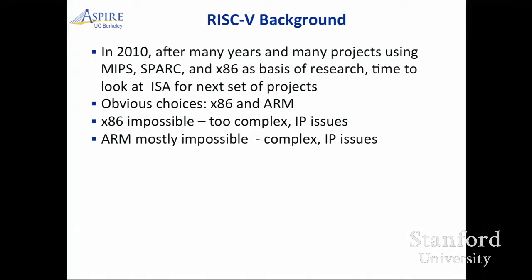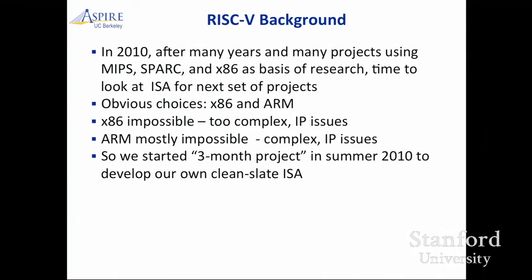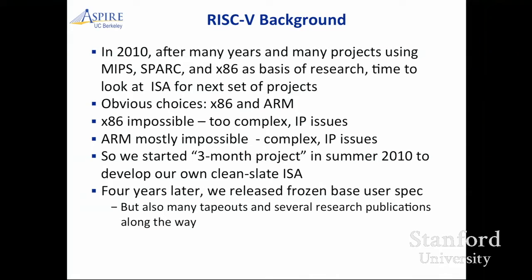When we started this, we thought there were IP issues — since then we've learned there are very, very serious IP issues with ARM and other issues. So in the summer of 2010, we decided on what we thought was a three-month project to develop our own clean-slate ISA. Four years later, we released the frozen user-level ISA specification. But it's not like we just sat down and wrote the spec for four years — over those years we did many silicon implementations, did drafts, and got rounds of feedback from people outside Berkeley. It's evolved a lot with input from many people.